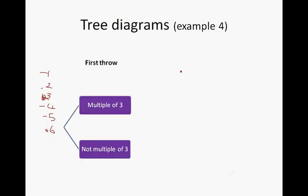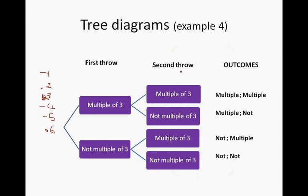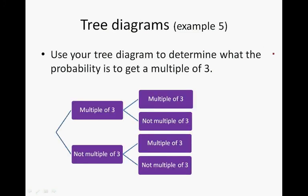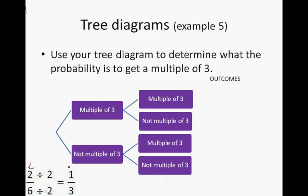This is the tree diagram for getting either a multiple of 3 or not a multiple of 3 — that is Example 4 answered. For Example 5, we use the tree diagram to determine the probability of getting a multiple of 3. There is a 2 out of 6 chance to get a multiple of 3. Simplifying 2/6 gives 1/3. We use 1/3 rather than 2/6 because 2/6 is unsimplified and would require simplifying the final answer; using 1/3 often avoids that extra step.